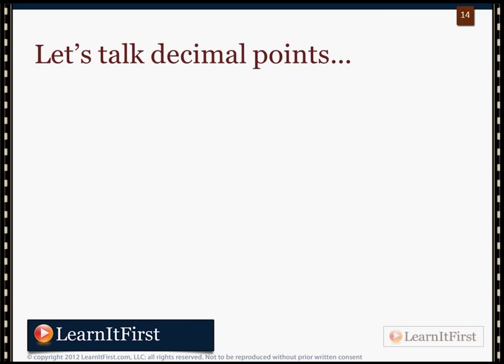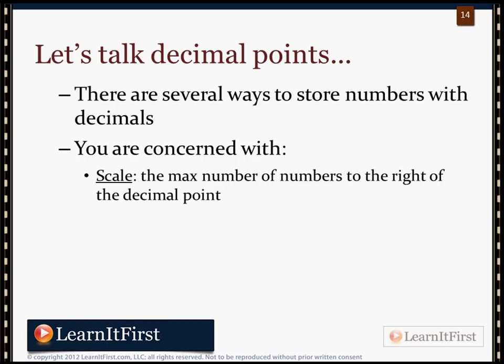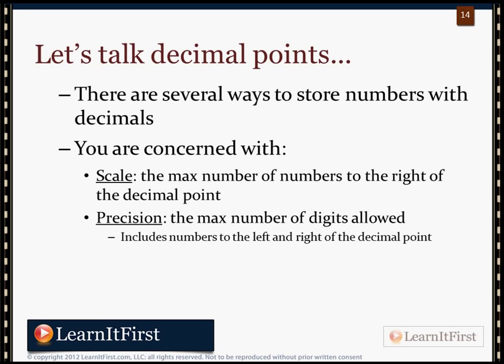Let's shift focus and talk decimal points. There are several ways to store numbers with decimal points. You're concerned with what's called the scale — the maximum number of digits to the right of the decimal point. And then there's precision, which is the total number of digits both to the left and to the right of the decimal point. The precision does not count the decimal point itself.